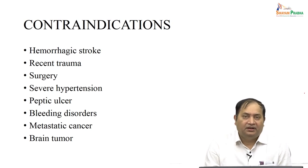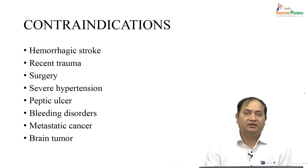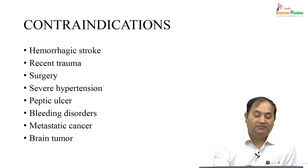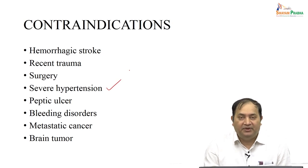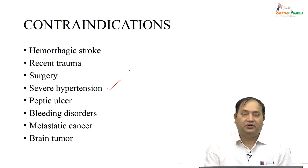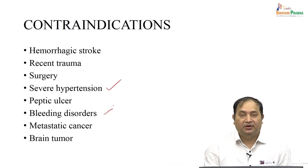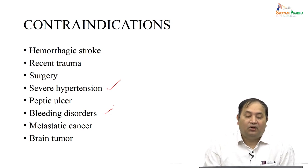There are certain contraindications for thrombolytics. Tissue plasminogen activator is given in ischemic stroke only — in hemorrhagic stroke it is contraindicated. If there is recent trauma or a bleeding tendency, thrombolytics should not be given. Contraindications also include planned surgery, severe hypertension (which increases bleeding tendency), history of peptic ulcer, any bleeding disorders, metastatic cancers, and brain tumors.